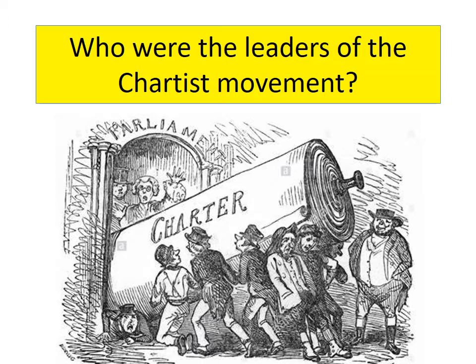Everything I'm going to talk about in today's lesson is actually available in the information booklet that you have. The information booklets for all of these sources topics — if we were in school we'd make them all different colours — but this particular one is Peel and Chartism, it's available on Schoology. There's one on the trade unions and pressure groups, one on factory and mine reforms, one on every single topic for the sources, and they are a brilliant source of information. I've not seen a sources paper yet in four years that couldn't be done by reading, learning, and understanding that booklet.